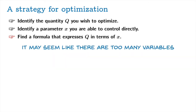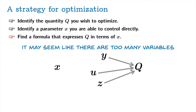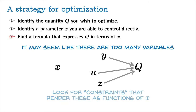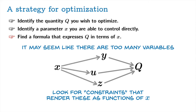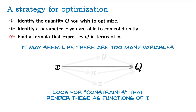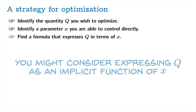It may seem, in a particular problem, like there are too many variables. You've identified something you can control and the quantity you want to optimize, yet there are other variables in play that seem to affect Q. If that is the case, look for constraints that render these as functions of X — they're not truly independent quantities. You can express each of them in terms of X, and in the end get a function with just one input X and one output Q. You might also consider expressing Q as an implicit function of X, as the optimization can go much smoother if you don't try to explicitly solve for X.